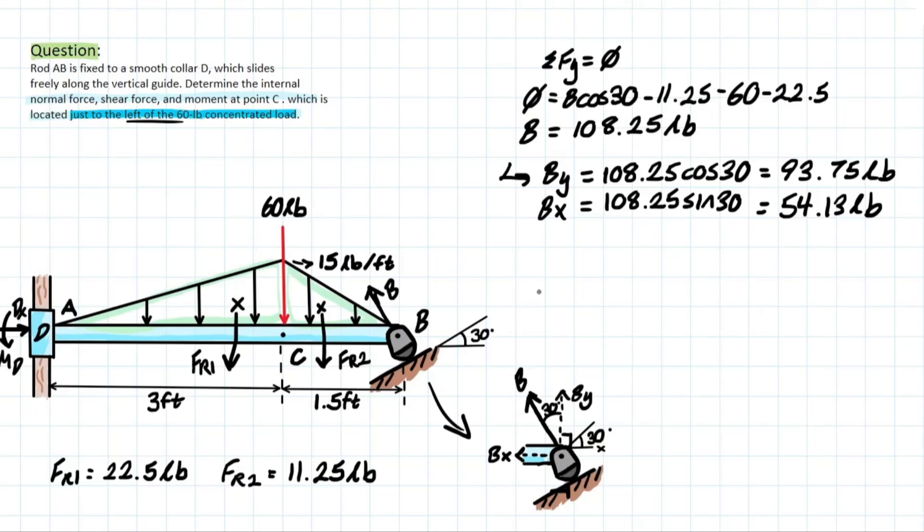So now what? What do we do? Do we have to solve for this MD? We actually don't need to solve for it. But why is that? We don't need to solve for it because we have everything we need if we took a section from left to right based on this point C. We have all the reactions that we need at that support. So we can simply take that cut already.